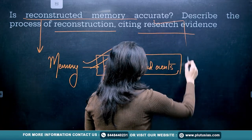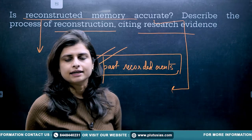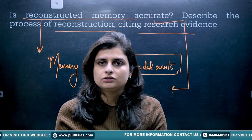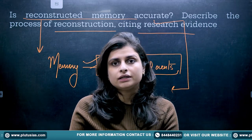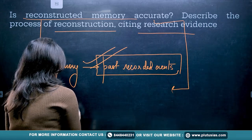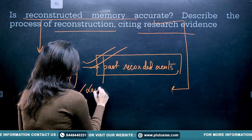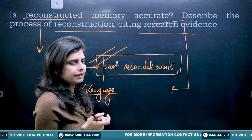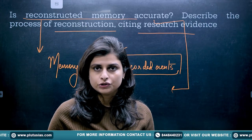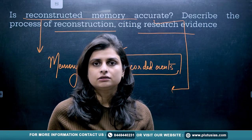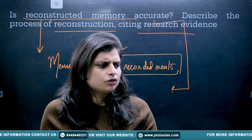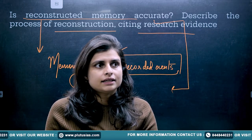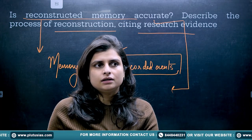There have been various research studies which have talked about the fact that a lot of information gathered from reconstructed memory was found to be inaccurate. The first reason being is language — the language based on which the information is retained in memory is going to be important before you reconstruct it. For example, if an accident happened and the car was at a certain speed.